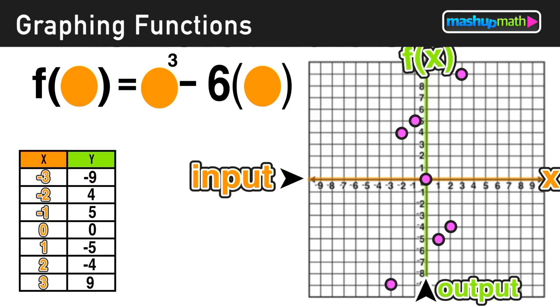Now we have a whole bunch of points here on our graph that represent our function. Now we have to be careful when we connect these points to draw a curve that correctly reflects this function. So to do that, we want to move from left to right as we connect the points.